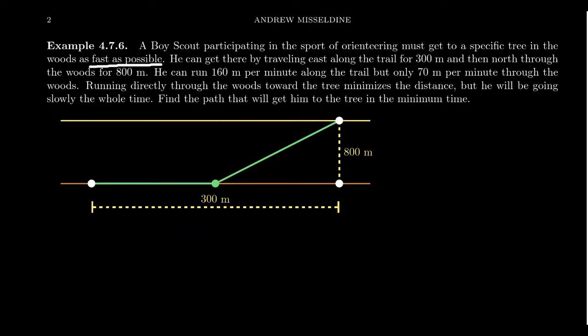Running directly through the woods towards the tree minimizes the distance but he'll be going slowly the whole time, kind of like with our rower. When the rower went diagonal, he went slower than when he went straight. So find the path that will give the Boy Scout to the tree in the minimum amount of time.